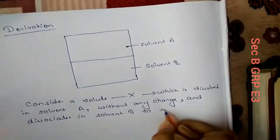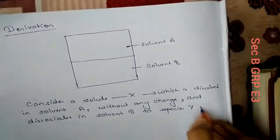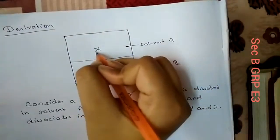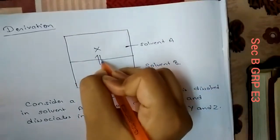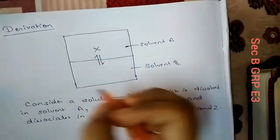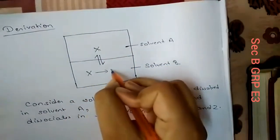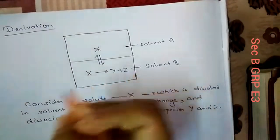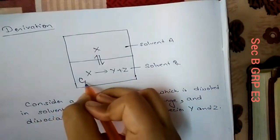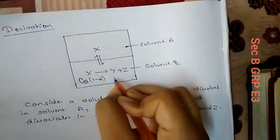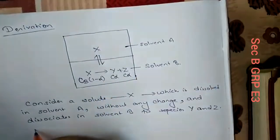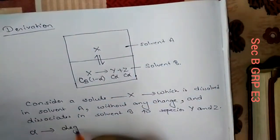In Solvent B, X dissociates into two species Y and Z. So the concentration of X in Solvent B changes. It is given by CB(1 − α), where alpha (α) is the degree of dissociation, and the dissociated species contribute CB·α each.